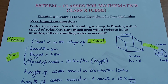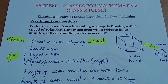Water in a canal, 6 meters wide and 1.5 meters deep, is flowing with a speed of 10 km per hour. How much area will it irrigate in 30 minutes if 8 centimeters of standing water is needed?